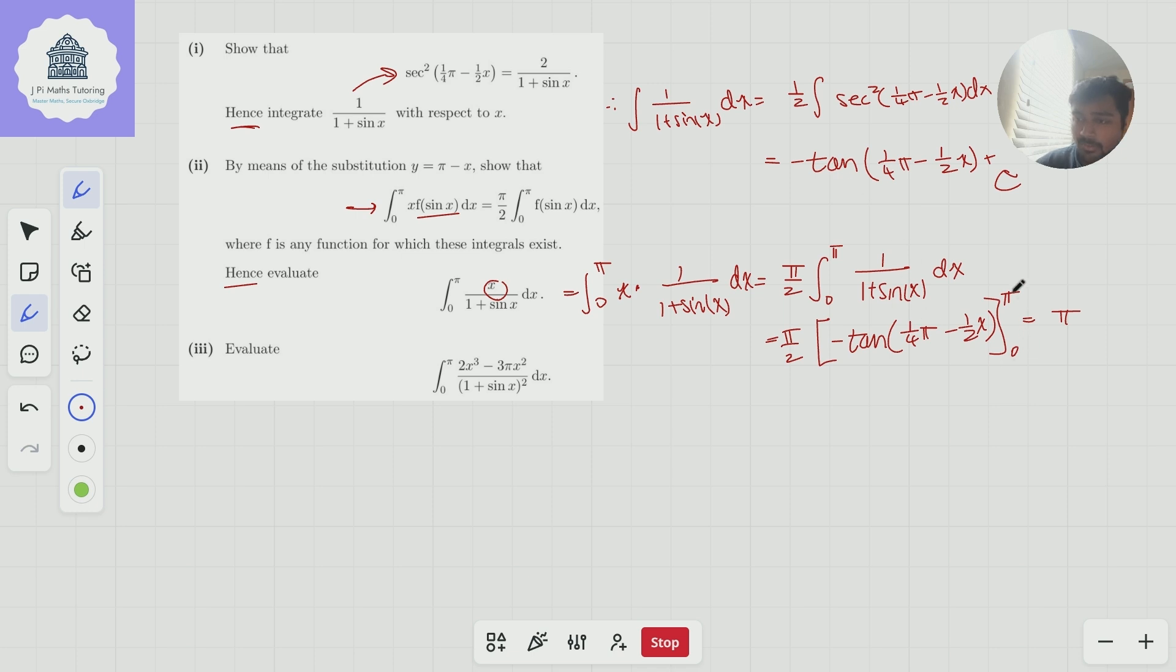So when you plug in π into this, you get a quarter pi minus a half pi, which is negative quarter pi. So that with this minus one in front will give you one. And then with the zero, you get tan of a quarter pi, which is also one. So it should be two. So pi over two times two gives you π.